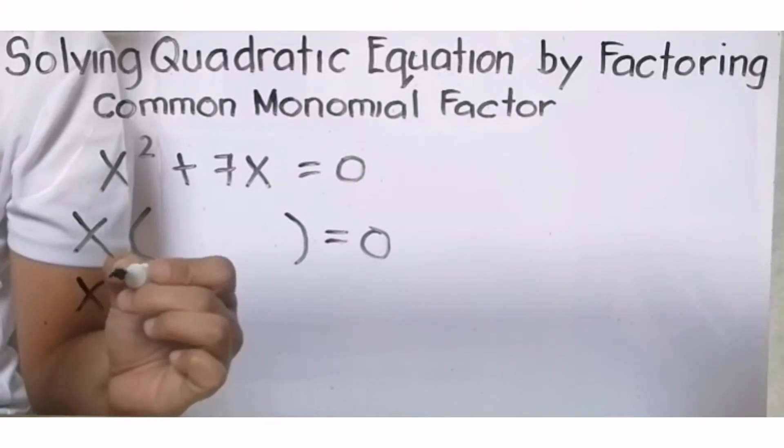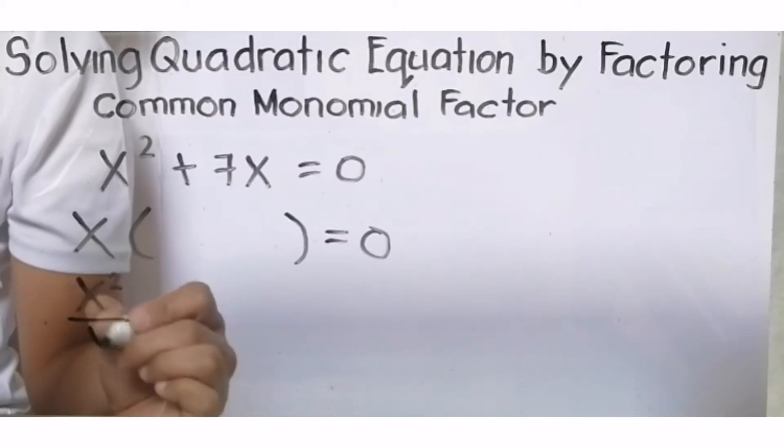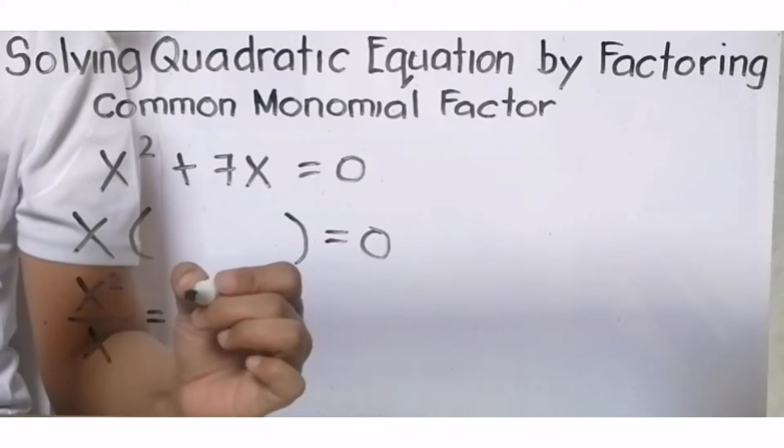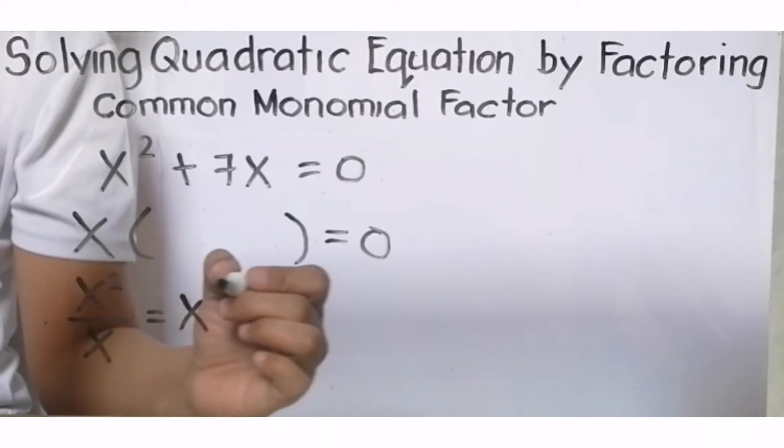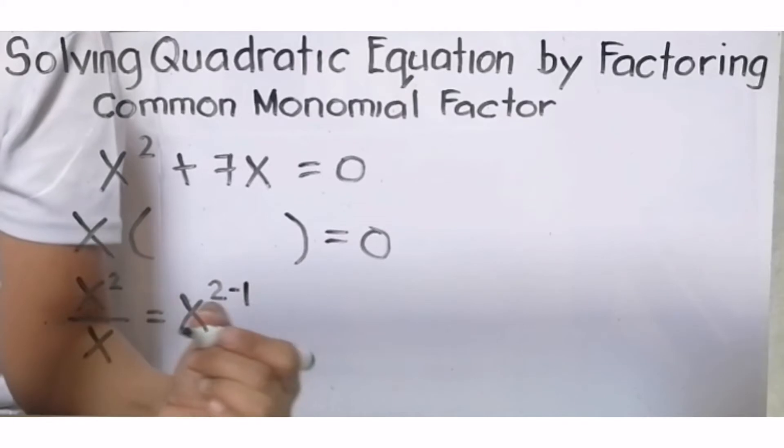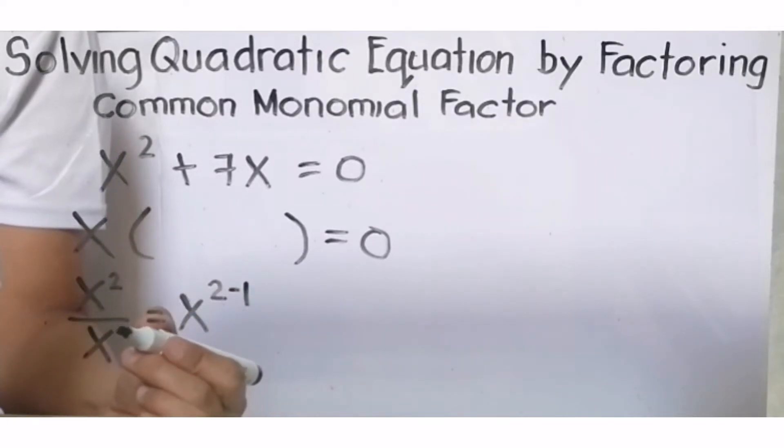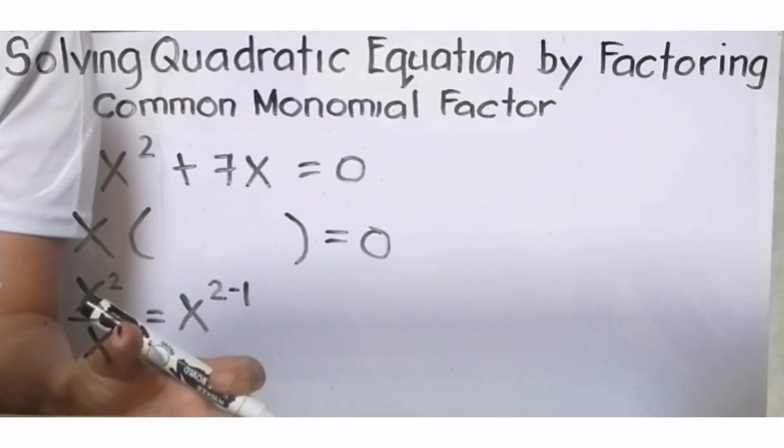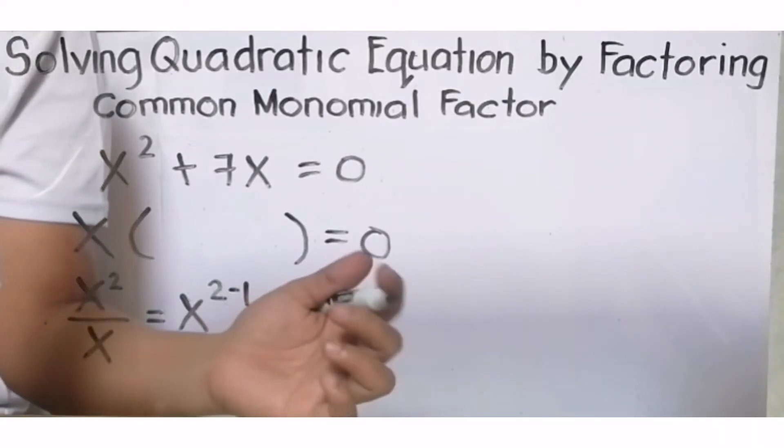Let us divide x² divided by x, ito ay x raised to the exponent of the numerator minus the exponent of the denominator. Sa mga nakalimot na, kapag ang variable ay walang exponent, automatic ang sinasabi niyan, may exponent siya na 1. Pero hindi lang natin ito nilalagay sa algebra. X as variable means ang exponent nito ay 1.